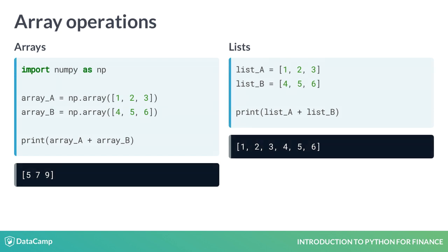Arrays are also different from lists in their operations. When you add lists using the plus sign, the lists will be concatenated. However, when you add numpy arrays, the result is an element-wise sum of both the arrays.